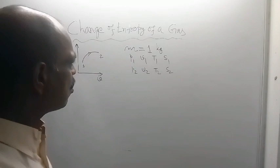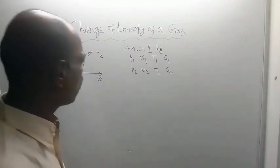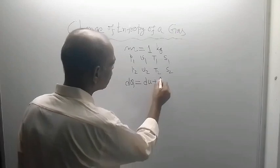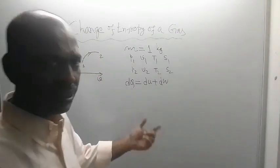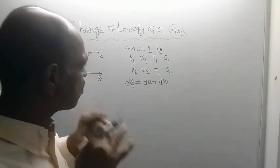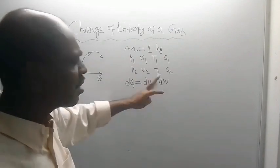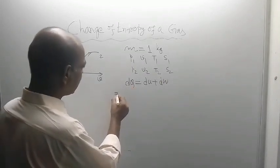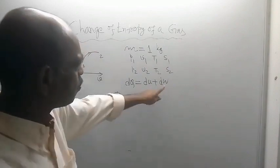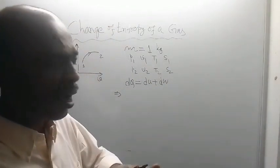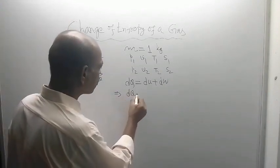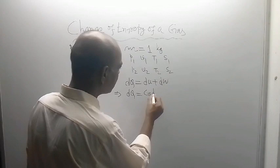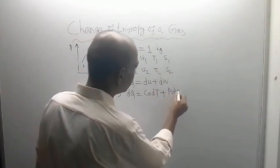Since it is a closed system, we should start from the first law of thermodynamics: DQ = DU + DW. Here U is internal energy, so DU means change in internal energy. Since only PDV work is present and no other work, the next line will be: DQ = CvDT + PDV.